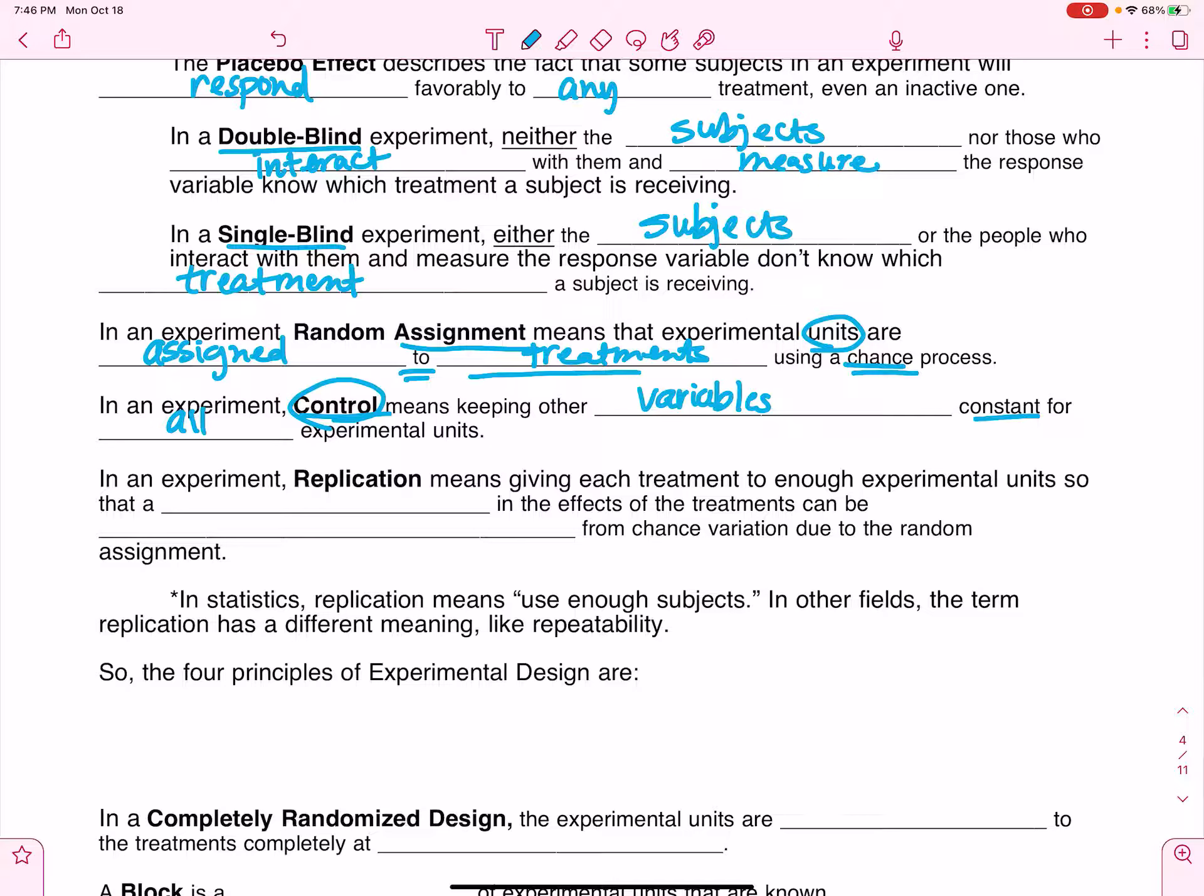Another thing that's important in an experiment is replication. That just means that each treatment is going to have enough experimental units in order to actually be able to see that there is a difference in the effects of the treatment and that it can be distinguished from chance variation due to random assignment. Replication means that you're using enough subjects.